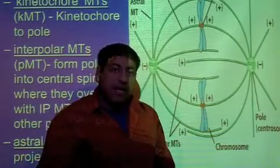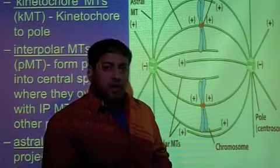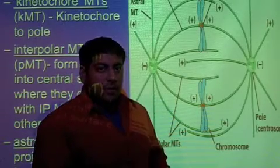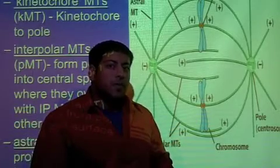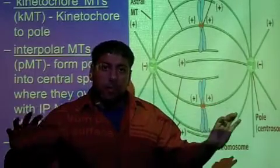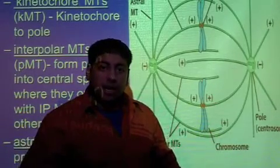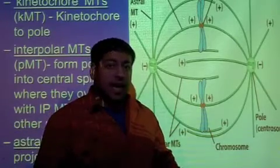We will see that there's a kinesin, a plus-end motor-directed protein, that's involved with their movement. The interpolar microtubules are going to be involved with pushing the centrioles or the poles further apart. They contribute to anaphase B, whereas the kinetochore microtubules are contributing to anaphase A.